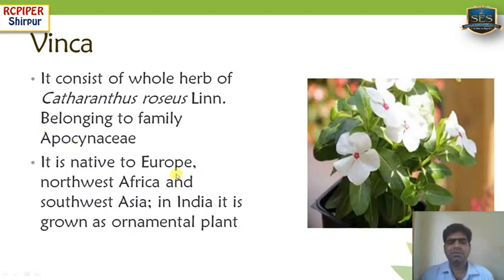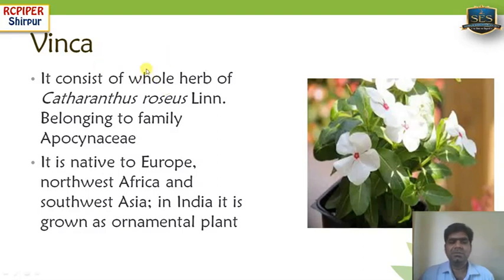Because of its anti-diabetic property, this drug was taken up for research by certain industries. While doing the research, they came across two alkaloids — vincristine and vinblastine — which later came to be known as anti-cancer molecules. These alkaloids are distributed in the whole herb from root to shoot, and because of that, the official part of the plant is the whole herb. The plant Catharanthus roseus belongs to the family Apocynaceae.